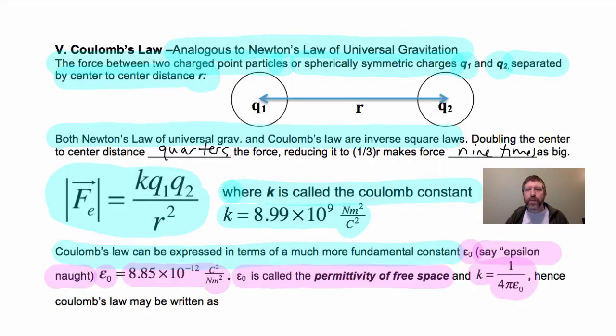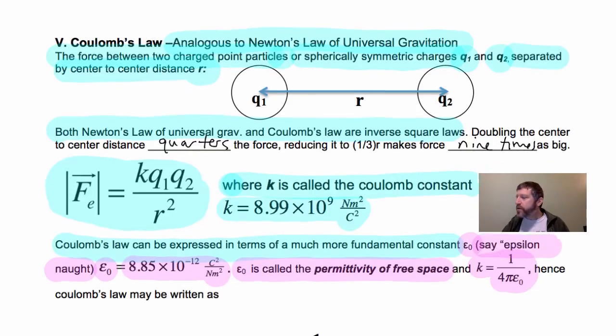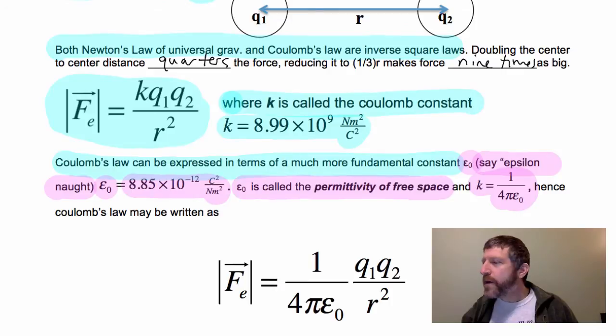Epsilon-naught is much more fundamental. It appears in a lot of different places in the derivation of the speed of light. It appears there, it appears in all of Maxwell's equations. So epsilon-naught, much more fundamental constant. You can use 1 over 4 pi epsilon-naught, or you can use K. So you can write Coulomb's Law in terms of epsilon-naught like this.